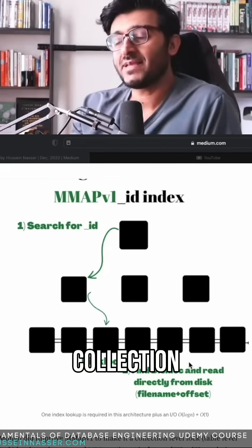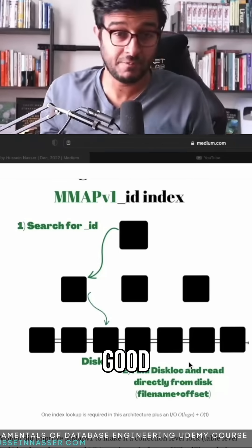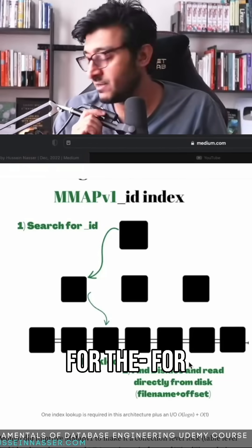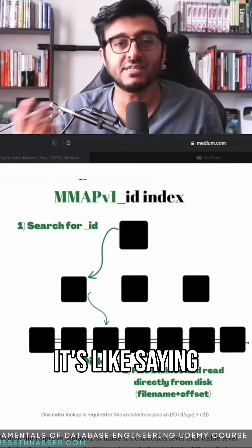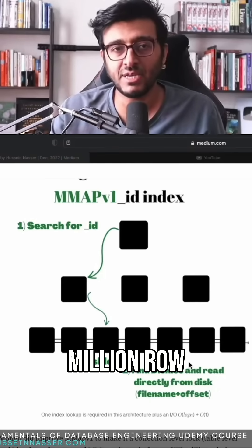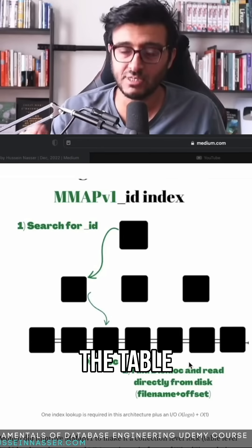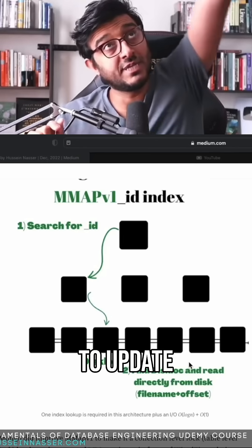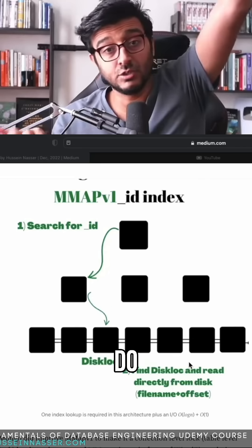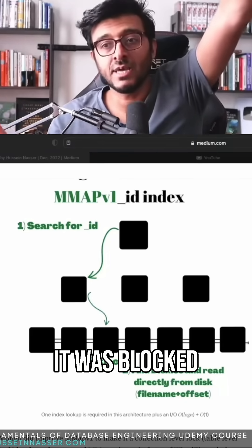In version two, they made it a collection-level lock, which is still not good. For SQL people, it's like a table lock. Imagine you have a table of a million rows and you want to insert a row, then update another row in the same table — they have nothing to do with each other, but they were blocked.